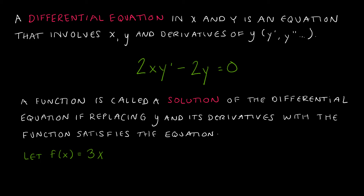For instance, 2xy prime minus 2y equals 0 is an example of a differential equation. Notice there's an x, a y, and a y prime. I could have more than one derivative, so I could have the second or third derivative. Now if we have a function that is a solution of the differential equation, it's considered a solution if we can replace y, y prime, y double prime, and whatever derivatives we have of y, with that function and its derivatives.